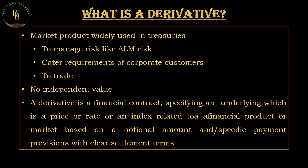Derivatives are like financial agreements that get their value from something else, like stocks, interest rates, or commodity products. They are kind of like bets on how these things will change in the future. They are market products widely used in treasuries to manage asset and liability management risk.